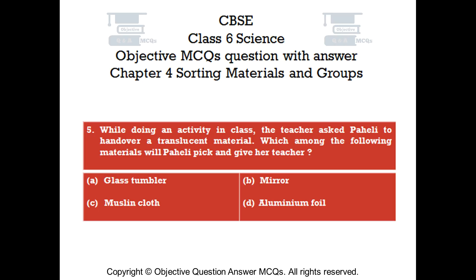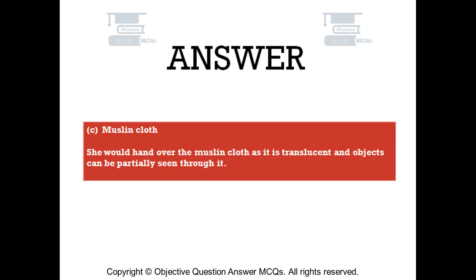Question number 5. While doing an activity in class, the teacher asked Pahali to hand over a translucent material. Which among the following materials will Pahali pick and give her teacher? Option C: Muslin cloth. Option D: Aluminium foil. The right answer is Option C — Muslin cloth. She would hand over the muslin cloth as it is translucent and objects can be partially seen through it.